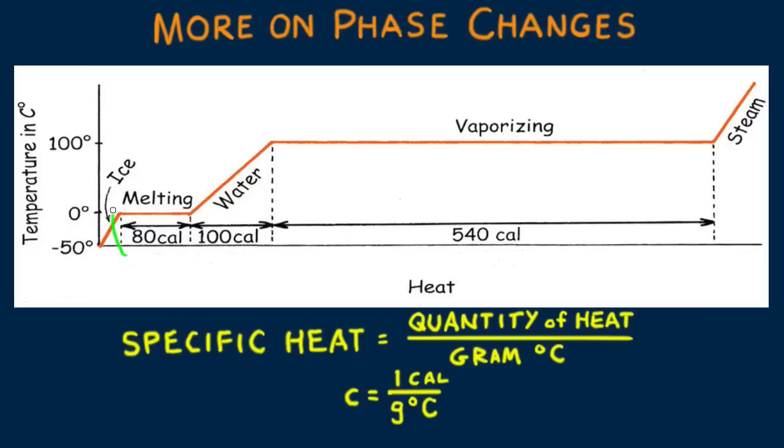Latent heat is the heat released or absorbed during a change of phase during which temperature doesn't change. We'll use the letter L for latent heat. For latent heat of fusion we'll use subscript F and for heat of vaporization subscript V.